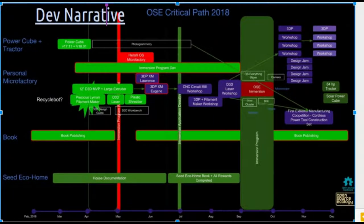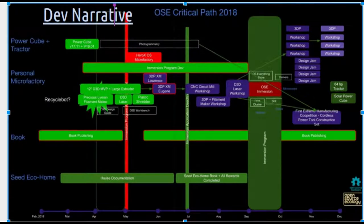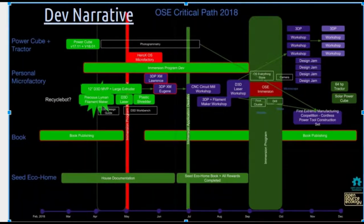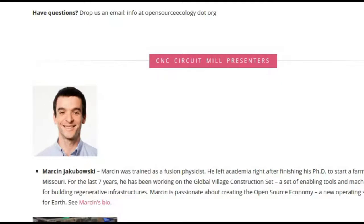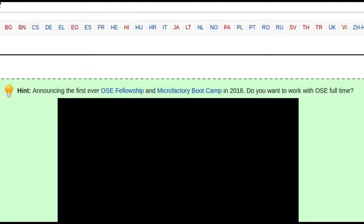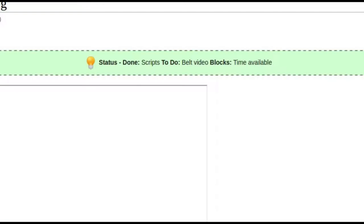That workshop is coming up in early July. For early August, we'll do the filament maker — I'm in touch with Dr. Pierce from Michigan Tech to see if we can hold it there, where we'd have a working filament maker and build an army of them. Toward the end of August we're going to squeeze in a laser cutter workshop — adding a small laser diode to the D3D CNC universal access platform. Then we've got the big immersion and boot camp in September.